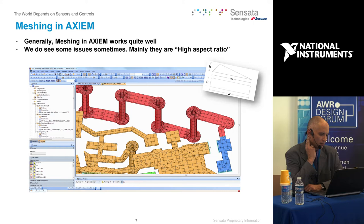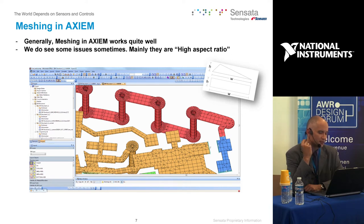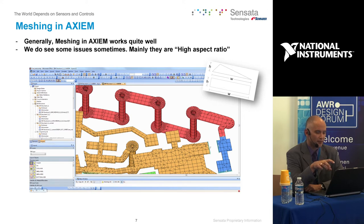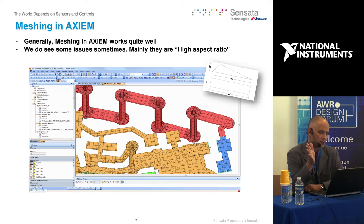The meshing in Axiem works quite well — it's a very good mesher. The only issue we see sometimes is the high aspect ratio, which we think comes from a compatibility or accuracy difference between software tools. The only way we found to fix this is to take the EM structure, change the grid size down to something very small like one micrometer, select all elements, snap them to the grid — which modifies the structure very slightly but won't impact results — and then re-run the mesher. The high aspect ratio issue disappears every time, so it's very easy to fix.